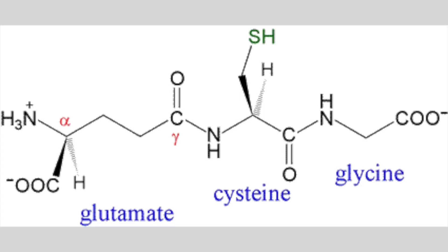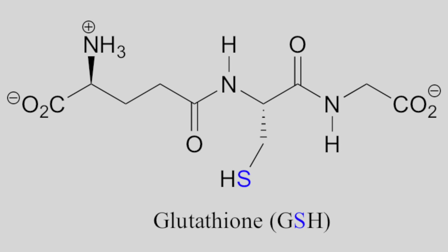Glutathione is actually a peptide — a peptide of three different amino acids: glutamic acid, cysteine, and glycine. Those three amino acids combined create a peptide that's also known as GSH, or glutathione.